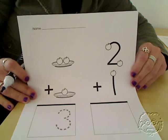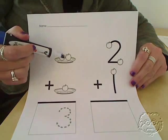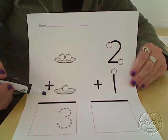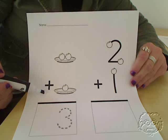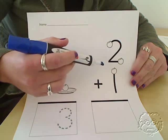2 plus 1. Over here, there's a picture of 2 apples plus 1 apple. You can use pictures as well. But let's use our dots over here.